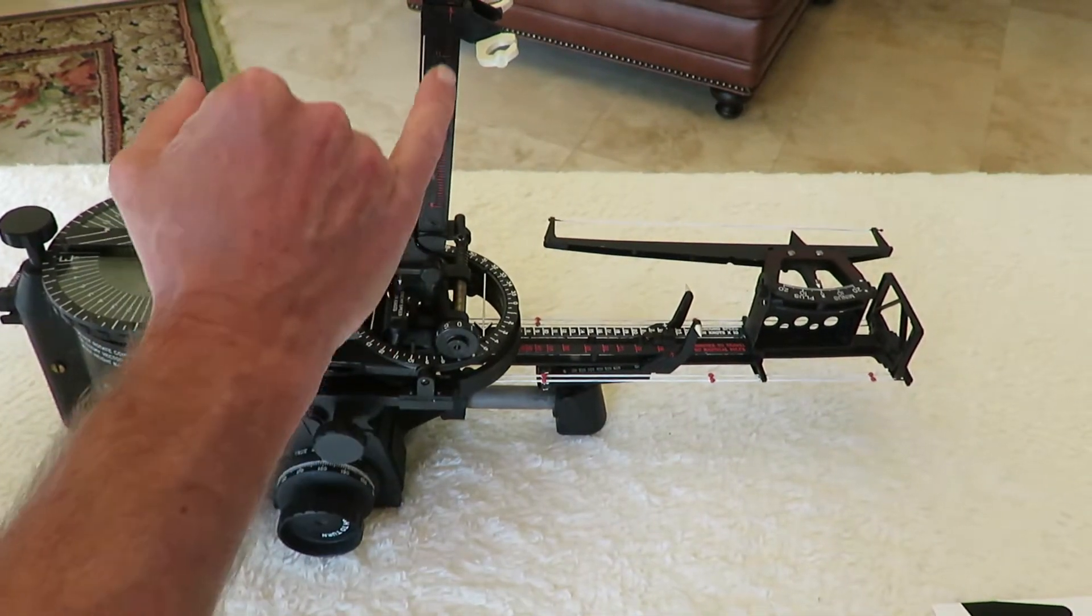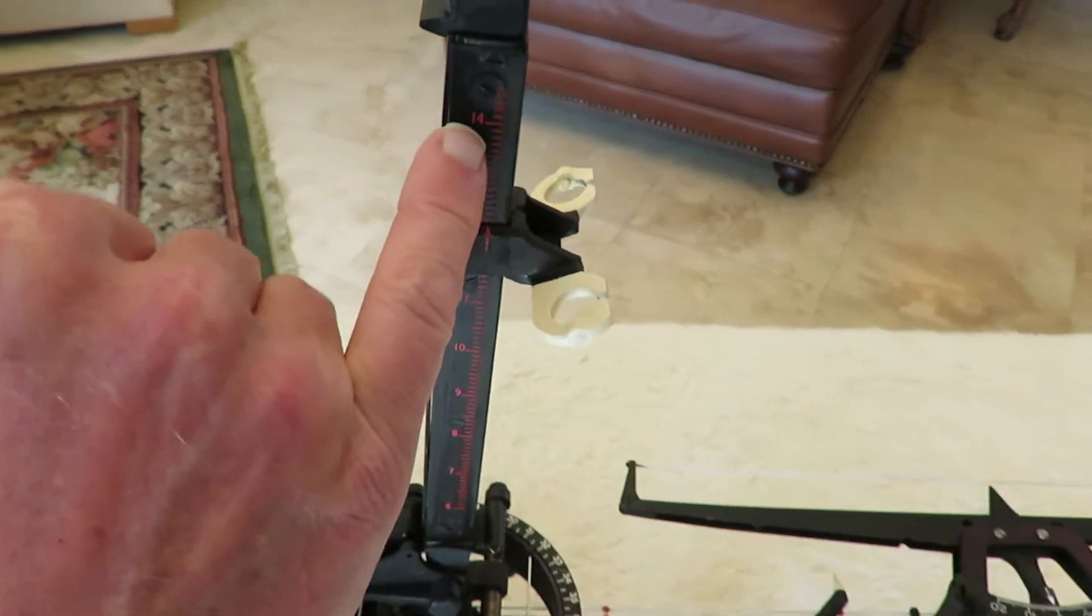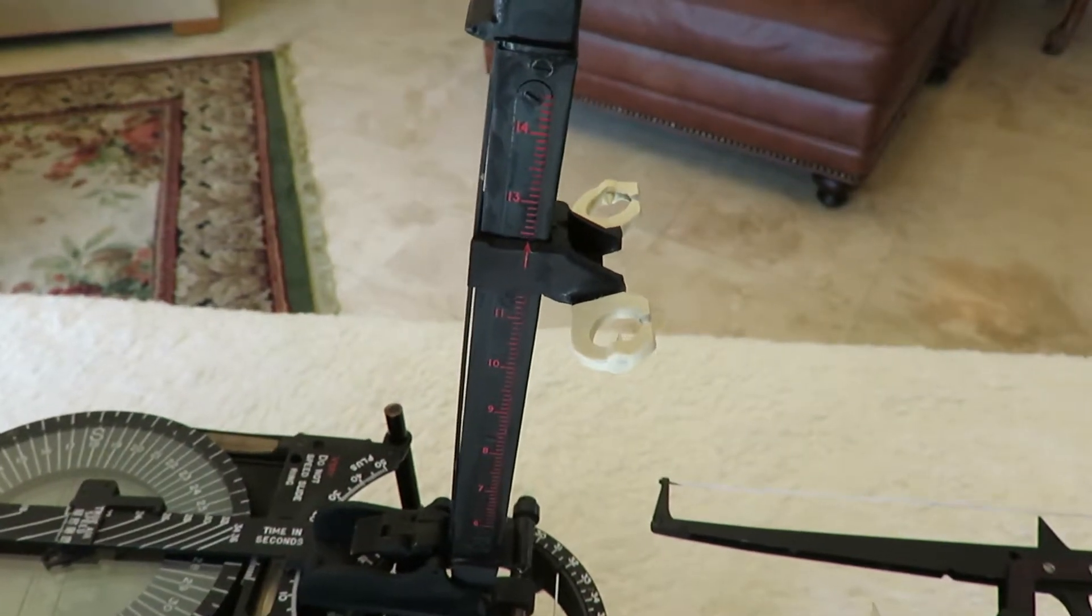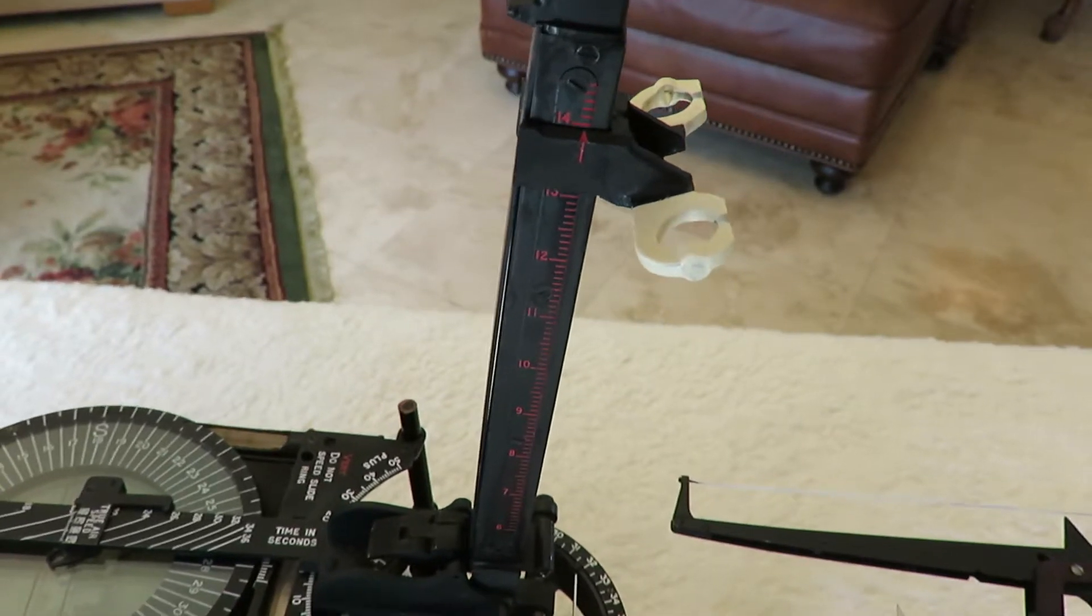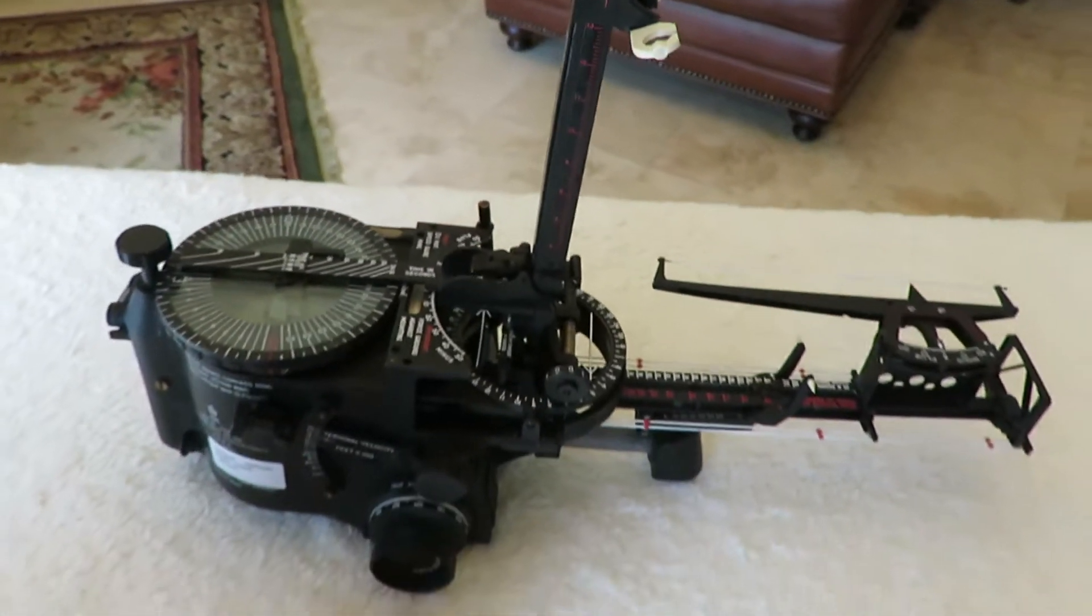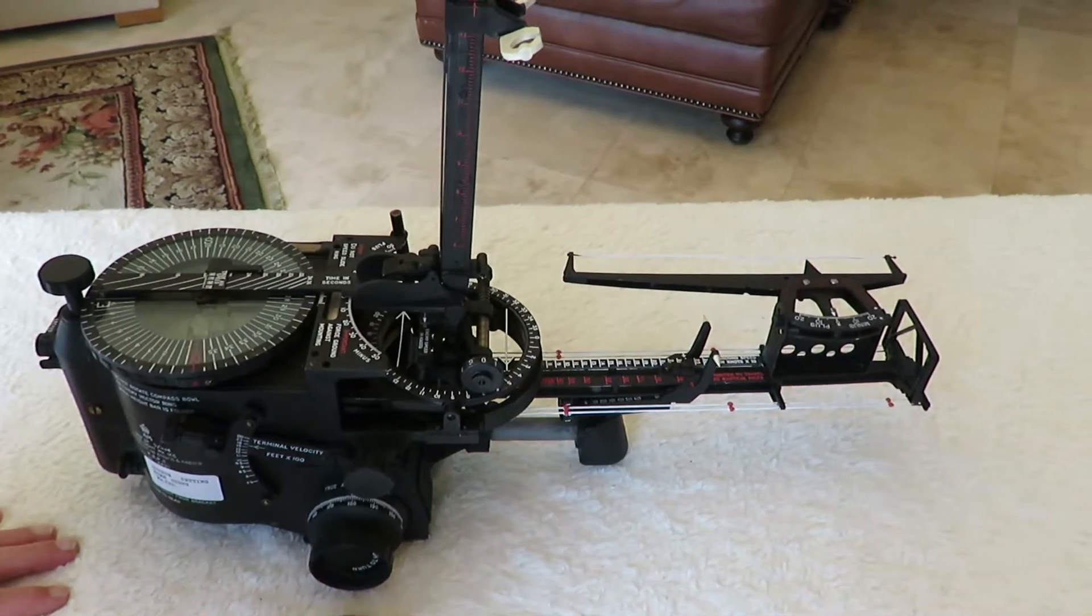We then will set the wind speed to maximum. We'll set the height above ground level on the red scale here, and we'll set this to 14,000 feet. Next, we need to determine the drift angle.